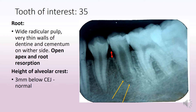Going back to the tooth of interest, we notice that tooth 35 has a very wide radicular pulp, because of which the walls of dentine and cementum have become very thin on either side. This has led to an open apex and very distinct root resorption at the apical portion of the root. The height of the alveolar crest appears normal, with about 3 mm of bone seen below the CEJ, which is fairly normal for this patient.